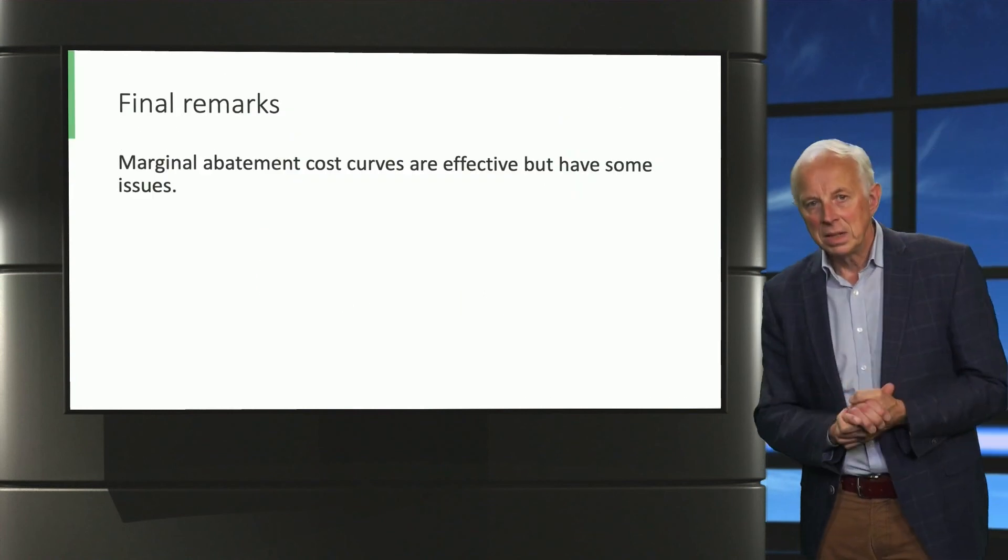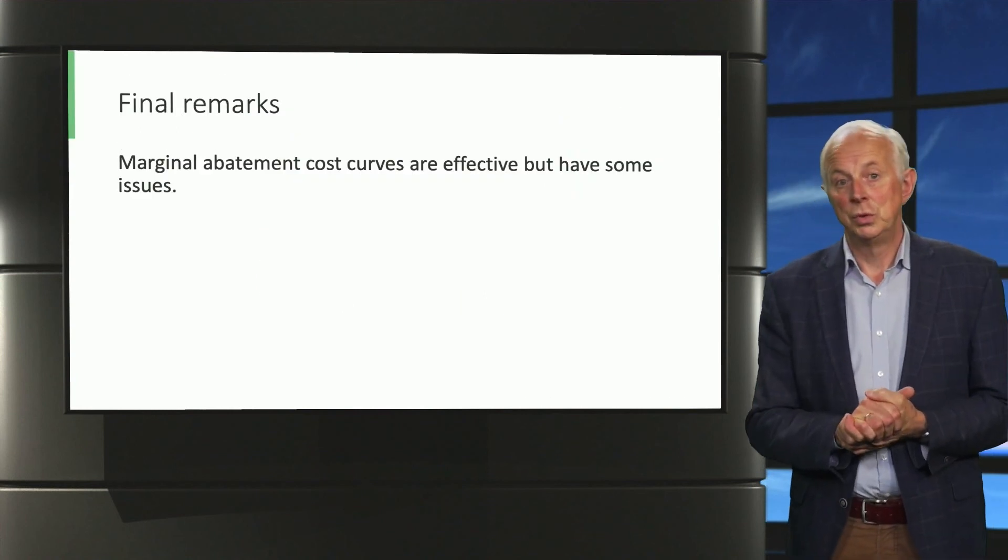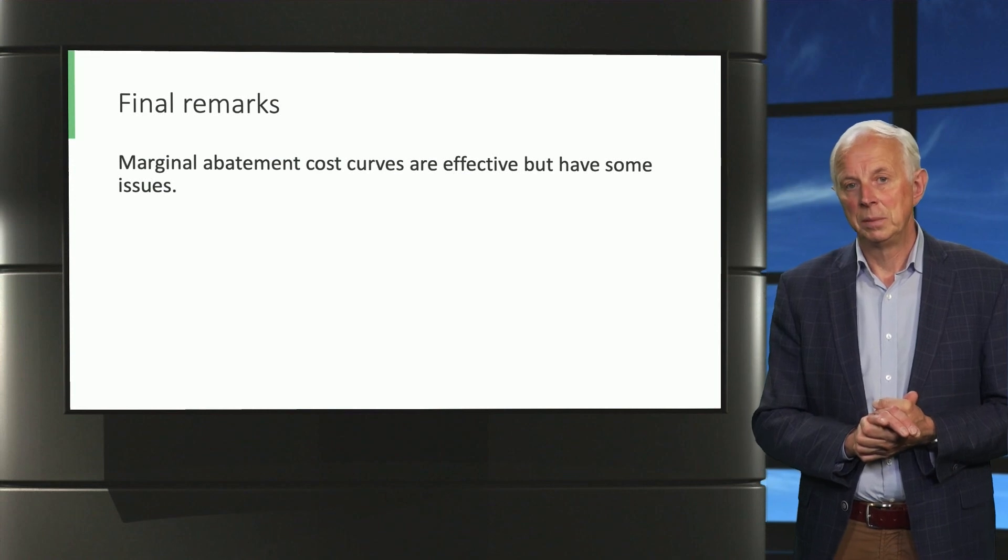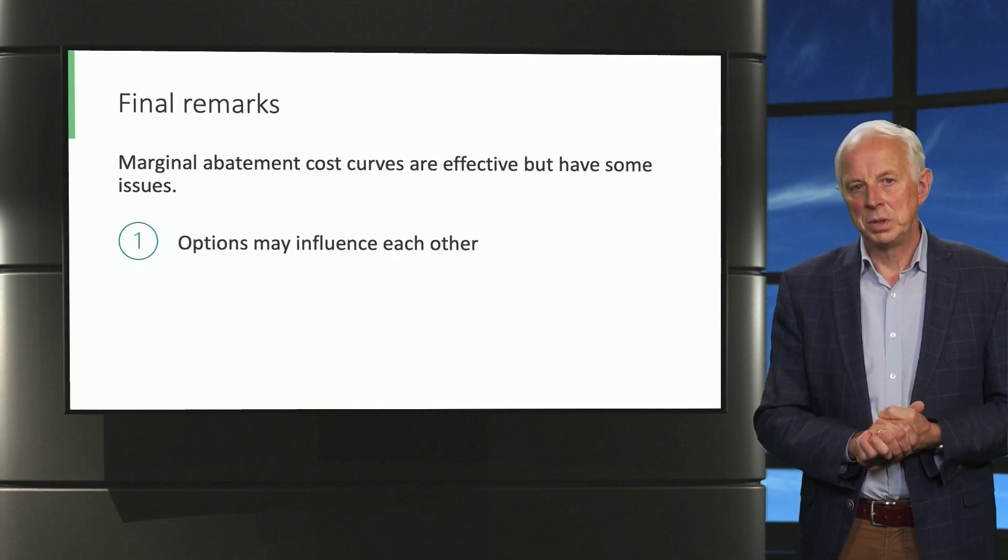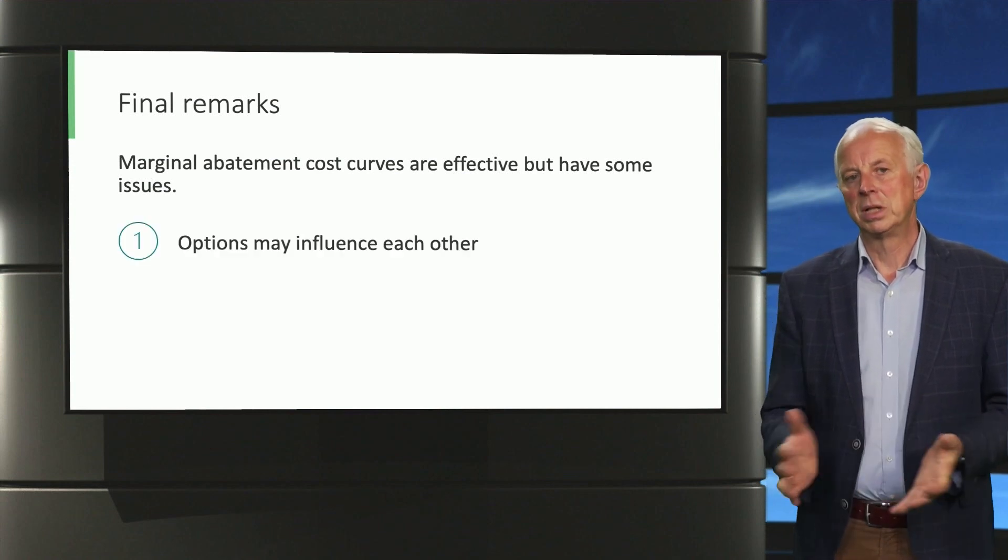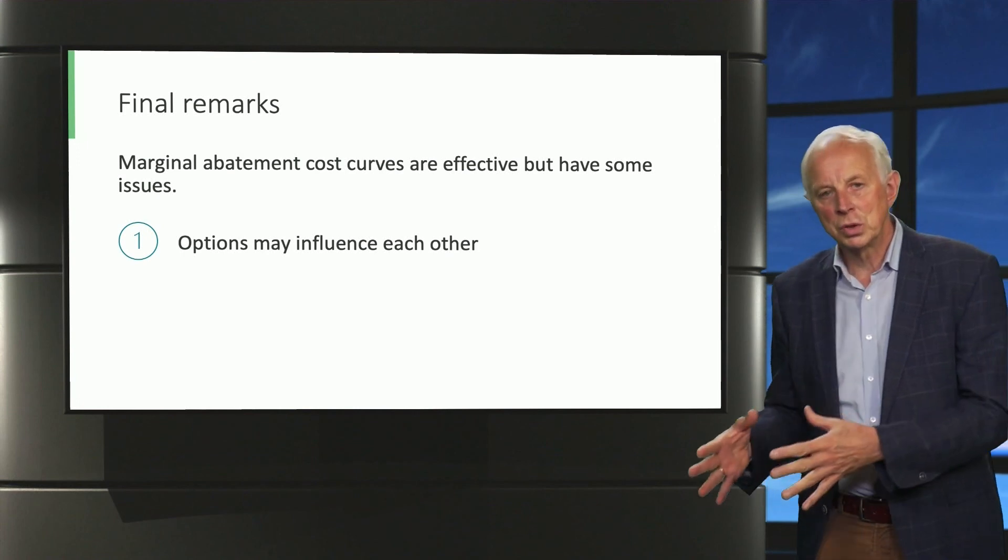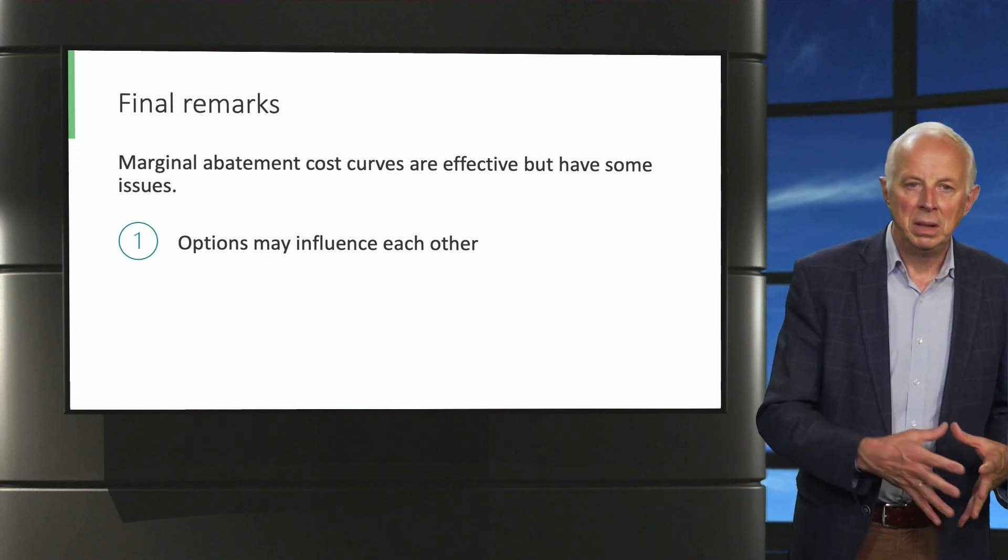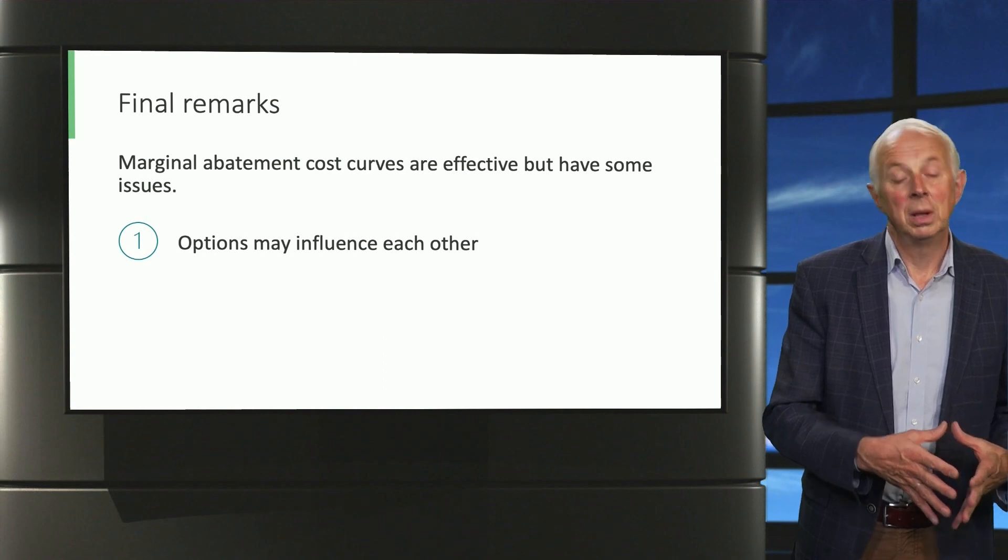Okay, having said this, marginal abatement cost curves do have some noteworthy issues. One of them is that options influence each other. For example, in the electricity sector, if you have more solar energy, this may mean that less wind energy is feasible and vice versa.